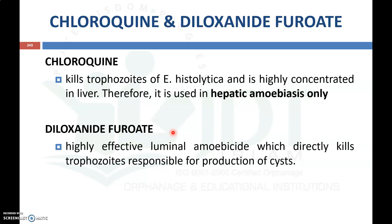Chloroquine kills the protozoa Entamoeba histolytica, which is usually highly concentrated in the liver, so chloroquine can be specifically used for hepatic amoebiasis only. Diloxanide furoate is a highly effective luminal amoebicide that directly kills trophozoites responsible for the production of cysts.